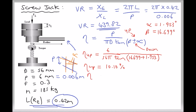For lowering operations, we repeat the same calculation but subtract alpha from beta instead of adding. This gives an efficiency for lowering operations equal to 12.96%. This difference in efficiency will be much greater with a lower coefficient of friction or a greater pitch angle. When lowering, the mass is working with us, and when raising, the mass is working against us — so the difference is highly dependent on the pitch angle alpha.